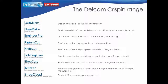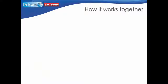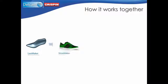Delcam Crispin Last Maker enables you to edit the 3D last on your workstation quickly and easily. You can make dynamic modifications to your last such as changing the shape of the toe end, widening or increasing the last length. This reduces your reliance on third party last makers. If you want to use your last at a later date, you can use the search function to find it in the last library. Once you've created your 3D last, you can easily import it into Delcam Crispin Shoemaker or Shoemaker Pro to create a 3D design.